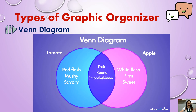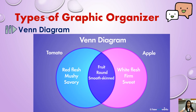Outside the middle section, the tomato side includes mushy, savory, and red flesh. On the other side, the apple traits include white flesh, firm, and sweet. Just remember, Grade 6: if you want to use a Venn diagram, draw two interlocking circles. The two outer sides represent the differences of the two, and the middle represents the similarities.